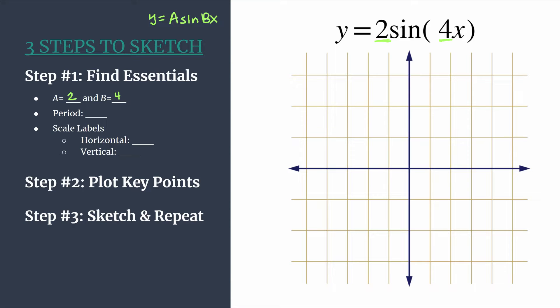This will tell us two important things. First, remember that b is how many cycles of our graph happen between 0 and 2π. So if we were to graph all of that for this equation, we would see four cycles of sine happening between 0 and 2π. The second thing we use b for is to find the period. We do that for sine by calculating 2π divided by b. So in this case, we have 2π divided by 4, which reduces to π over 2.